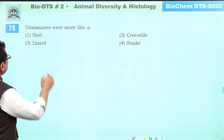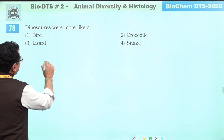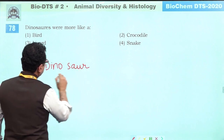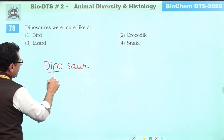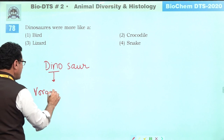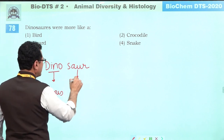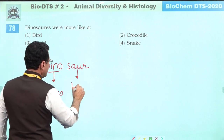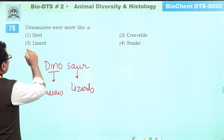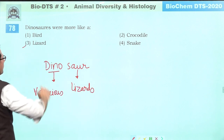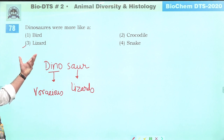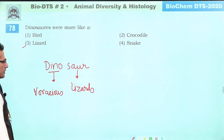Dinosaurs: 'dino' means voracious and 'saur' means lizards. So dinosaurs are more likely to be a type of advanced lizards. Answer is three.